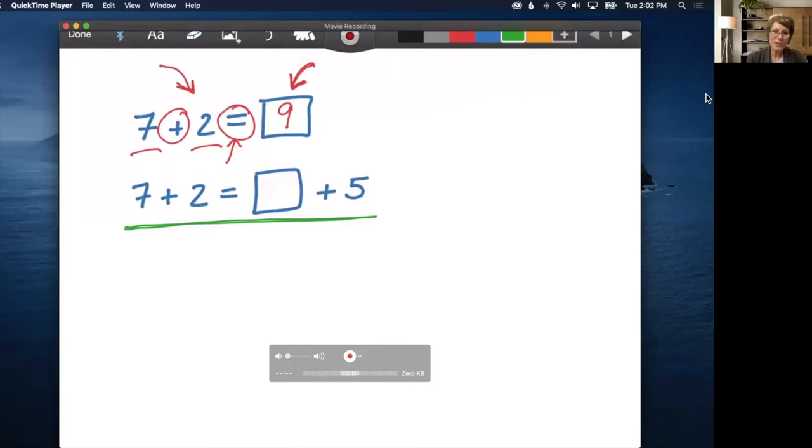If you have a student treating the equal sign like an operation, they're going to put nine in there. So if you see that, you know that's the problem. They're treating it as an operation as opposed to a relational symbol. Obviously, the answer we want here is four, so that the amount on this side is the same as the amount on this side.